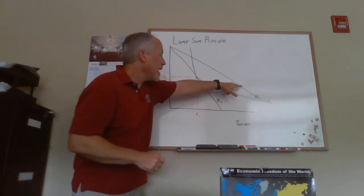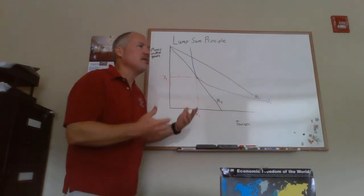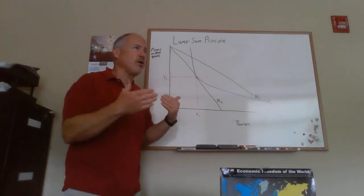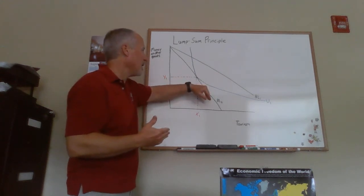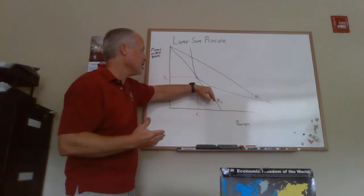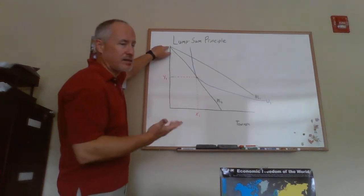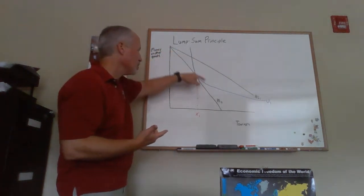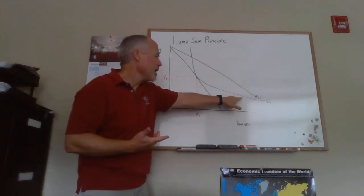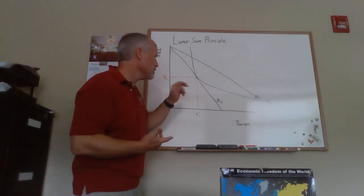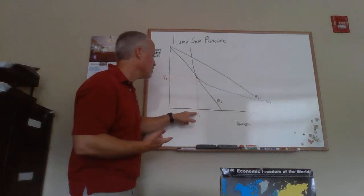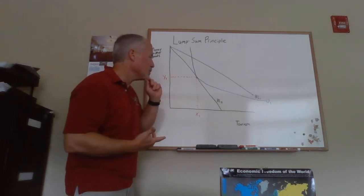The tax on tourism has the effect of increasing the price of tourism, so that's going to make this budget line steeper. We'll keep the same y-axis intercepts. The budget line simply becomes steeper. I've drawn in the indifference curve for which we're going to have a tangency point with the tax in place.